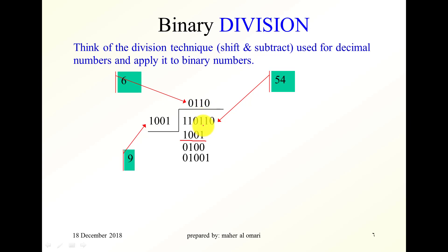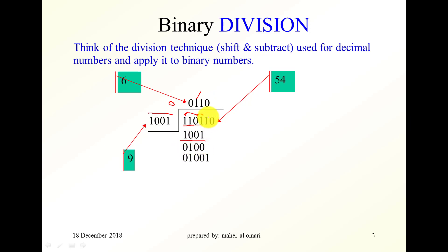Let's take an example on division: divide this number, which is the binary representation of 54, by this binary number, which represents 9. The first one, two, then three digits give zero because they are less than the divisor. Adding the fourth digit gives a result of one. One multiplied by 9 is 9; we subtract and bring down the next bit, getting a new number. Dividing again gives one, then the remainder gives zero. The answer is 6, confirming that 54 divided by 9 equals 6.